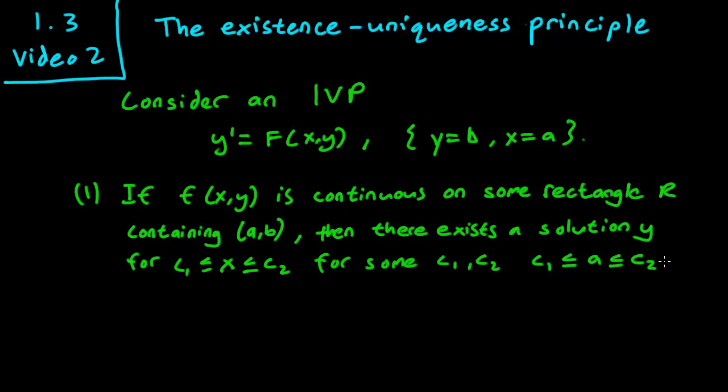Now what this says is that if you can check that f is continuous - sorry I wrote the wrong f here, let me fix that. If f is continuous on some rectangle r around this initial value, then we know that the solution exists. But we don't really know yet if there is only one solution.